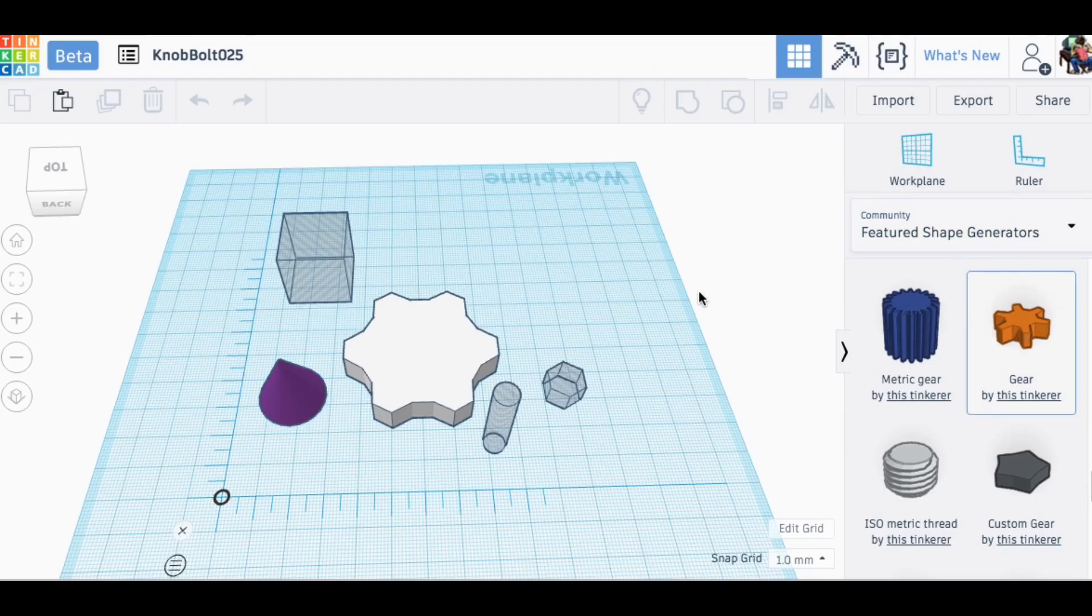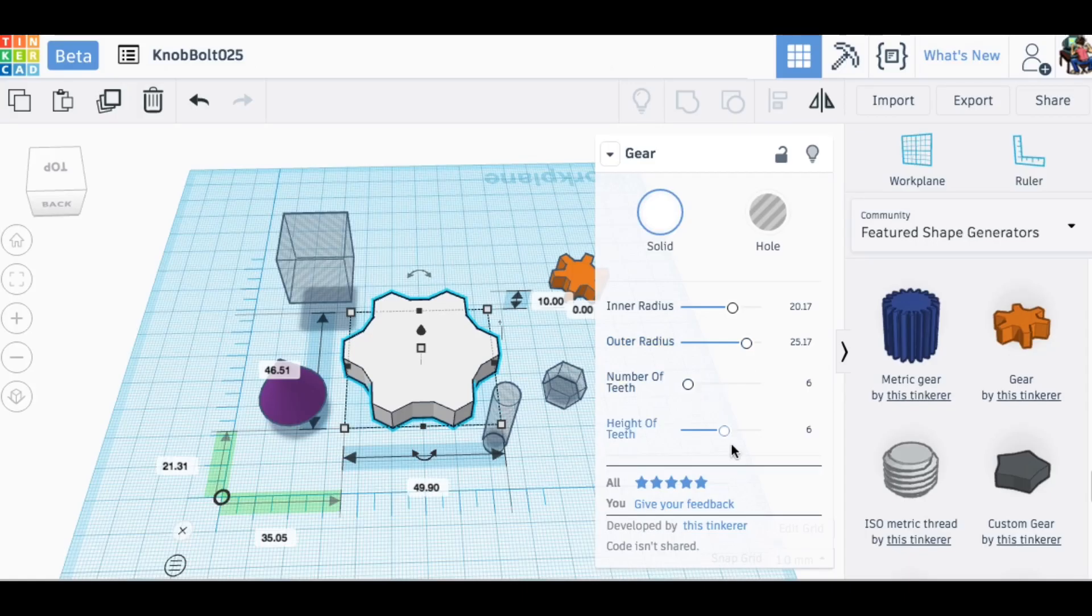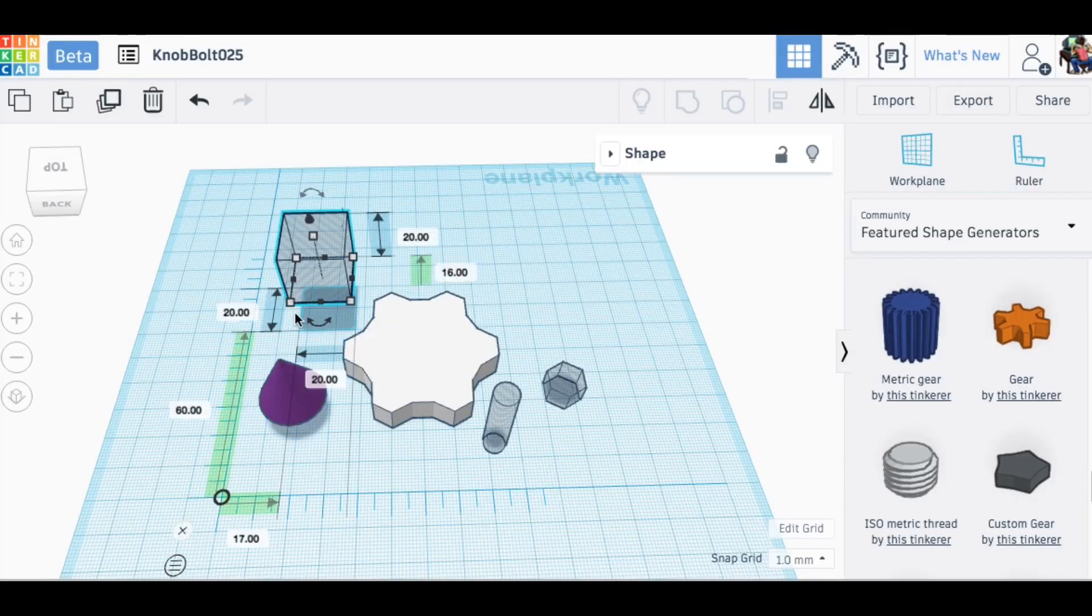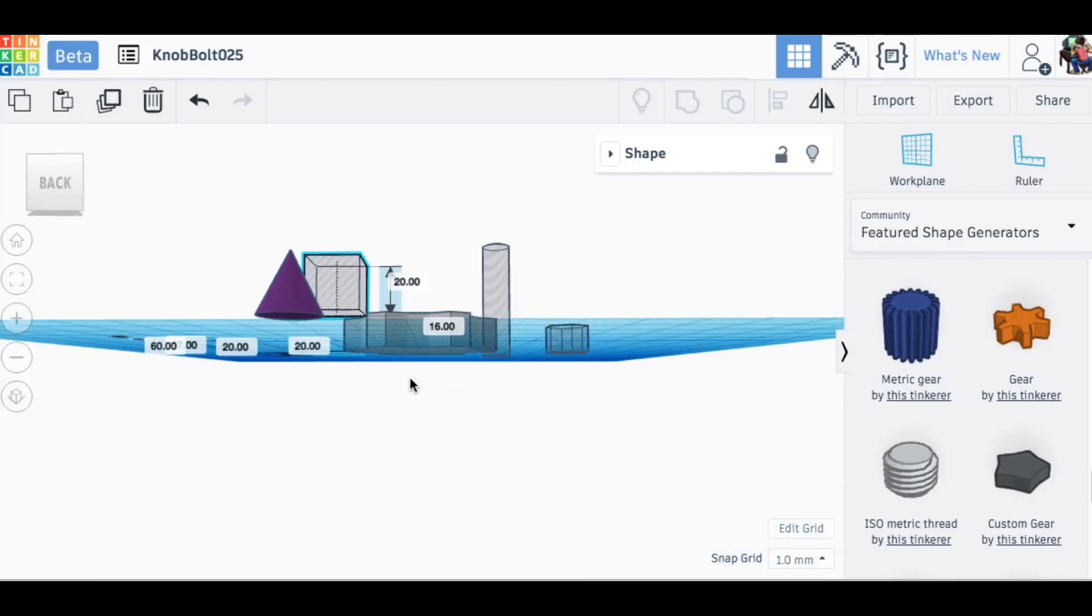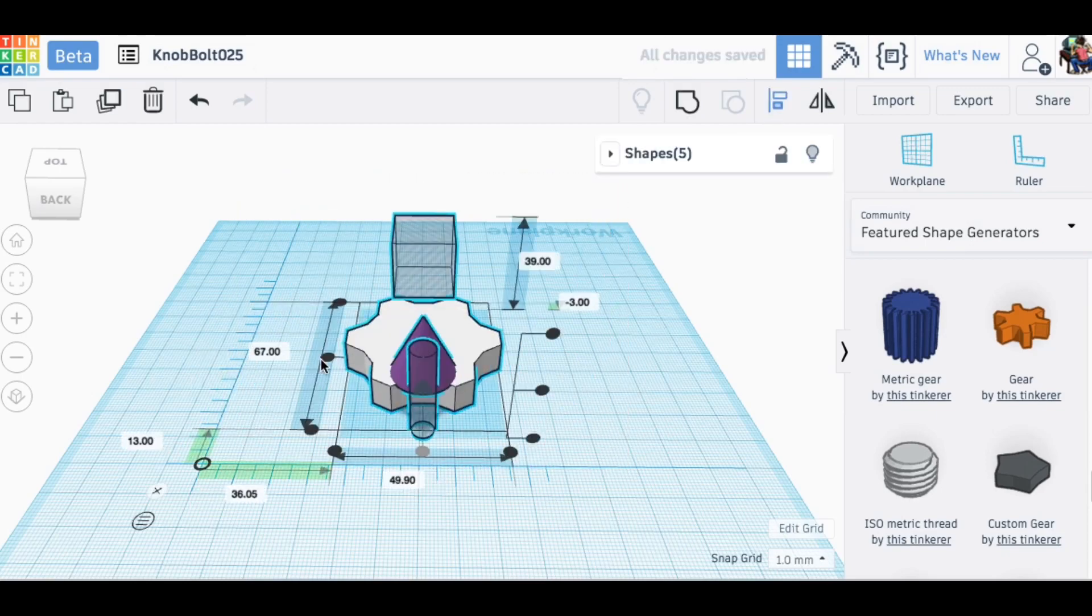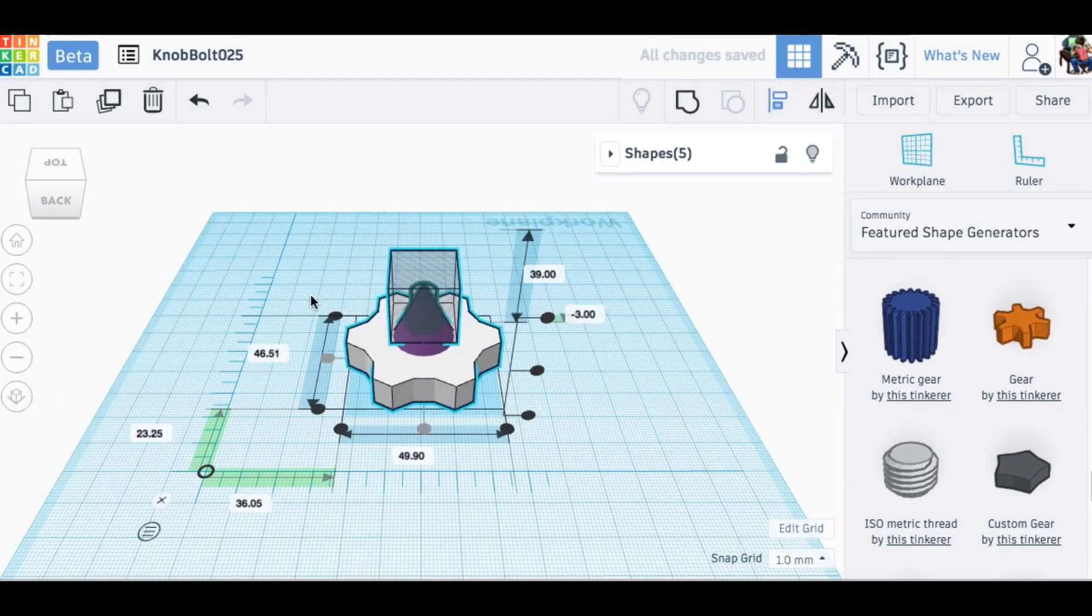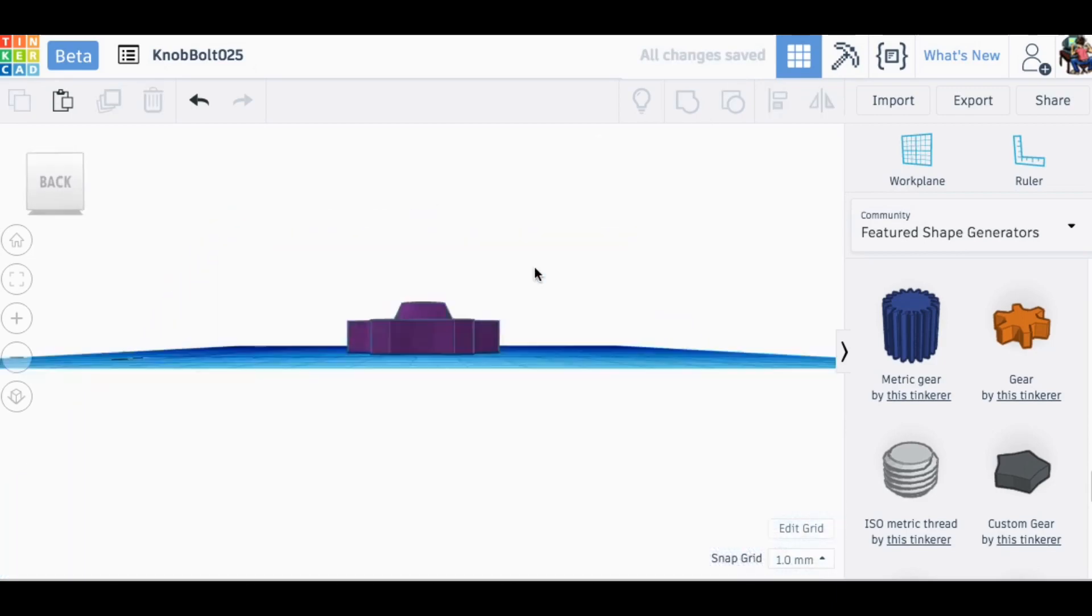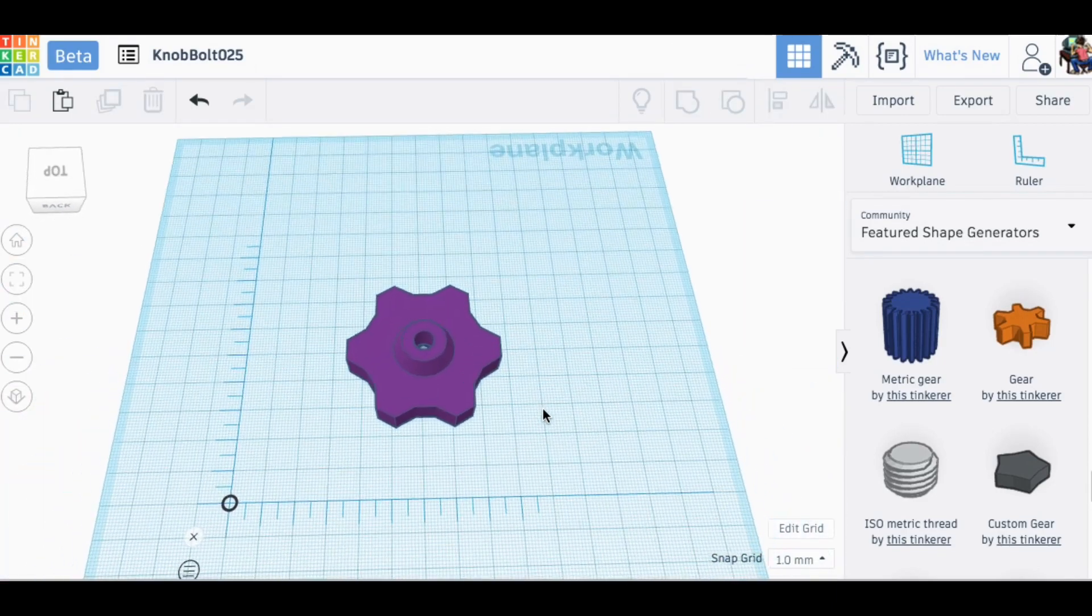I designed my own knob in Tinkercad. I used a gear from the featured shape generators and you can adjust the size and shape, so I got it the way I wanted. Then I had a nut for the insert, a hole for the bolt, a cone on top that I was going to cut off at the top so it would be an offset. I centered all of them and then grouped that together and when I was done there was my knob. Pretty easy to put this thing together.